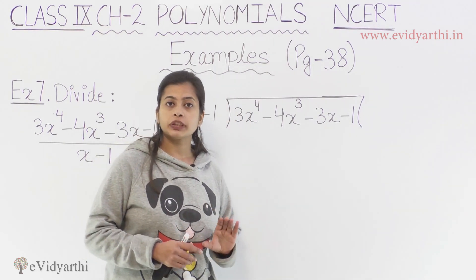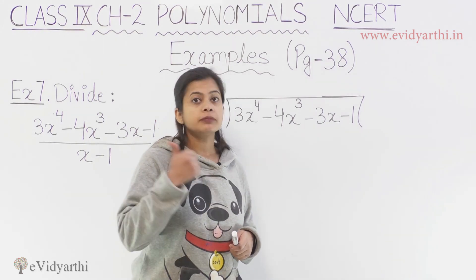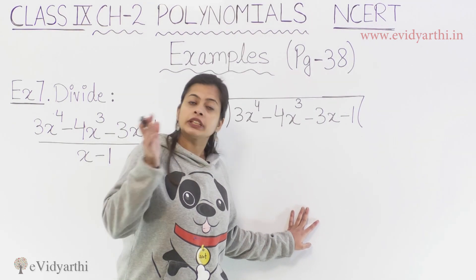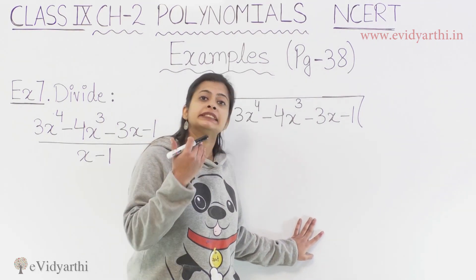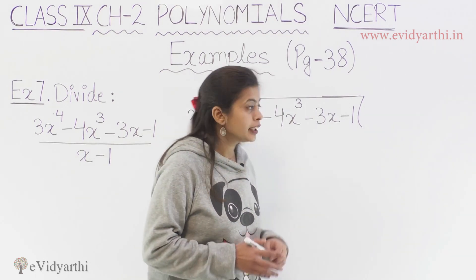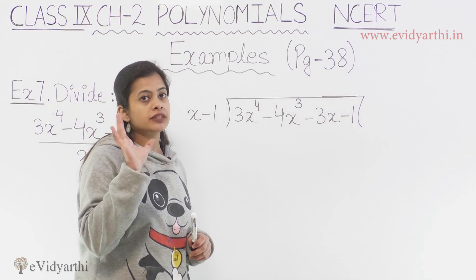We have an equation that the dividend is equal to the quotient into the divisor plus remainder. So you can verify this as well. This division of polynomials is the same division that you have to do. This will also justify the division verification.